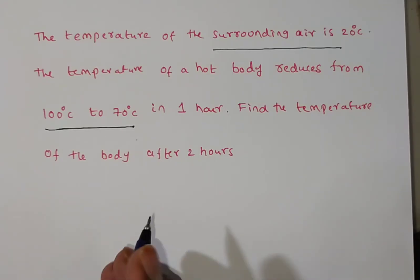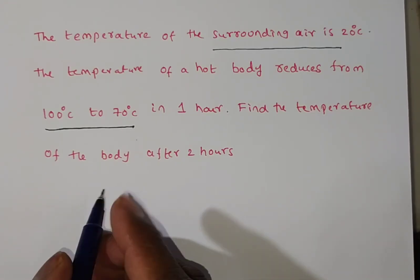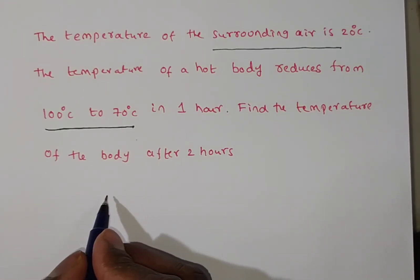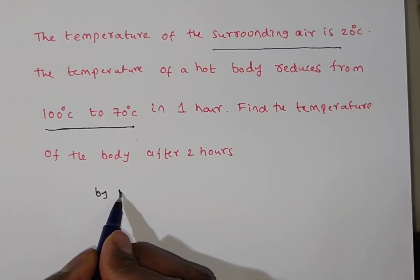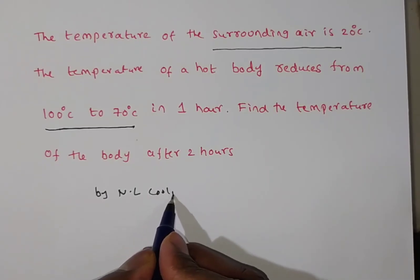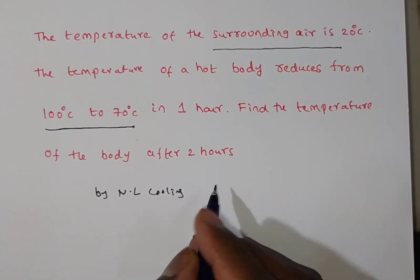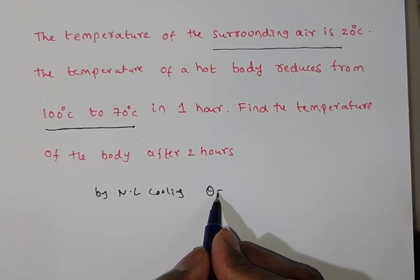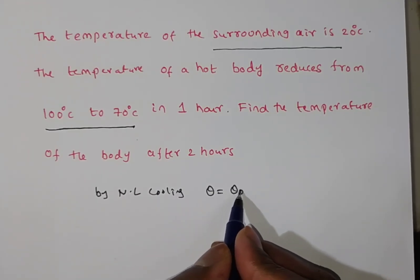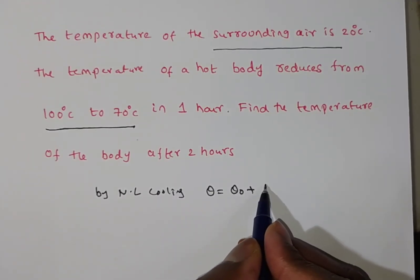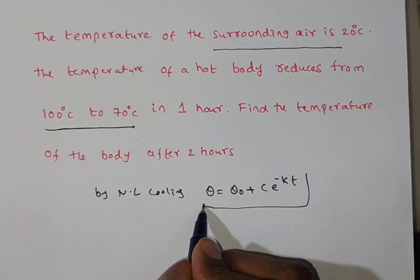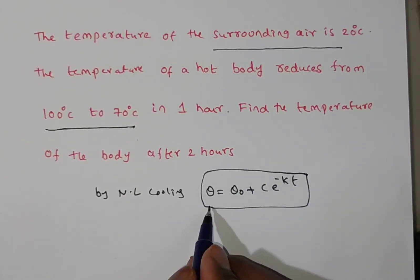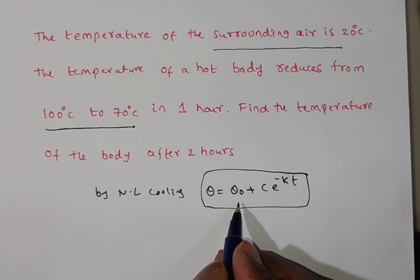Now, the formula for Newton's law of cooling is: theta is equal to theta naught plus C times e to the power of minus KT, where theta is the temperature of the body and theta naught is the surrounding media temperature.